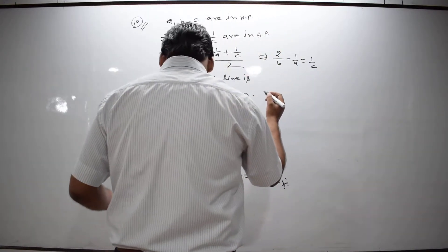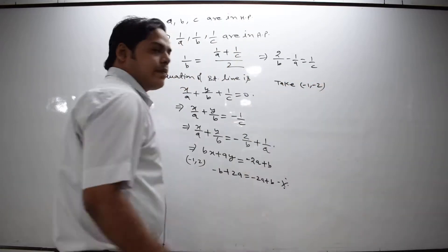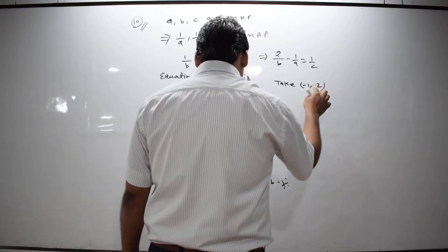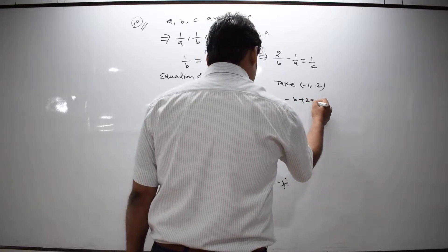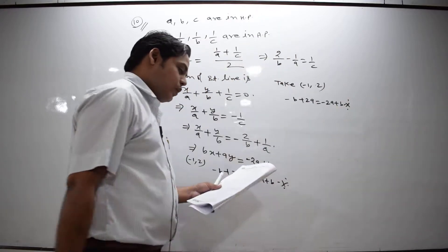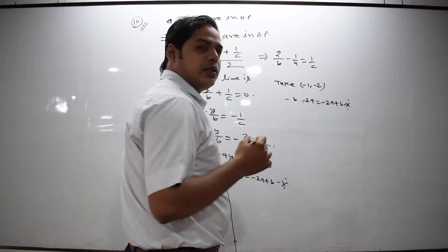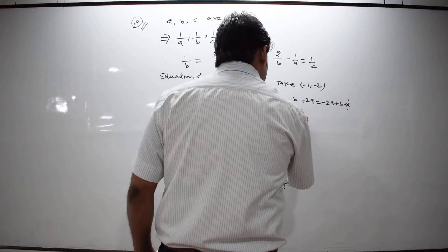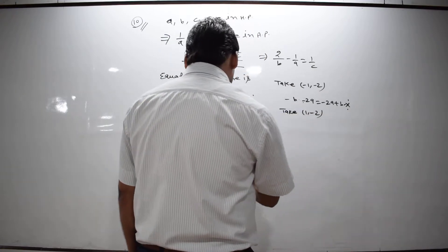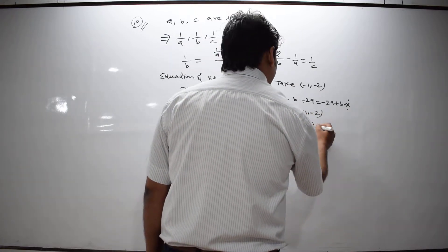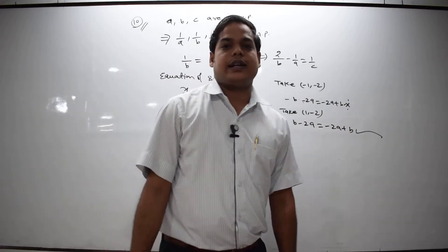Checking the second option, taking (-1, -2): it gives -B + 2A = -2A + B, which is also wrong. Now, if we take the point (1, -2) — that is option C — then we get B - 2A = -2A + B, which is correct. So option C is the correct answer.